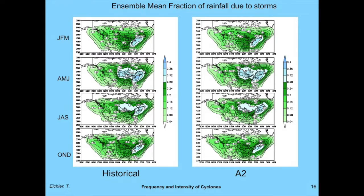A question you can ask is: how much of the rainfall is due to storms versus total rainfall? I divided storm-related rainfall by total rainfall. Historical on the left, A2 on the right. You see a maximum on the East Coast in wintertime — about 30 to 35% of rainfall is due to cyclones — and about 25% across the Midwest. As we go toward summer, looking at the Midwest, it drops to about 20% as the main storm track shifts north. The A2 run shows very similar structure, not much difference from historical.